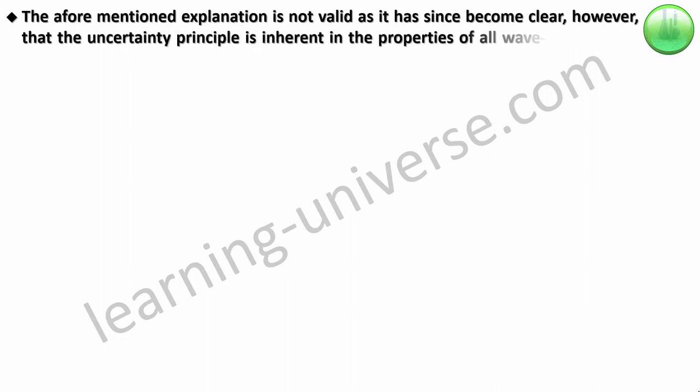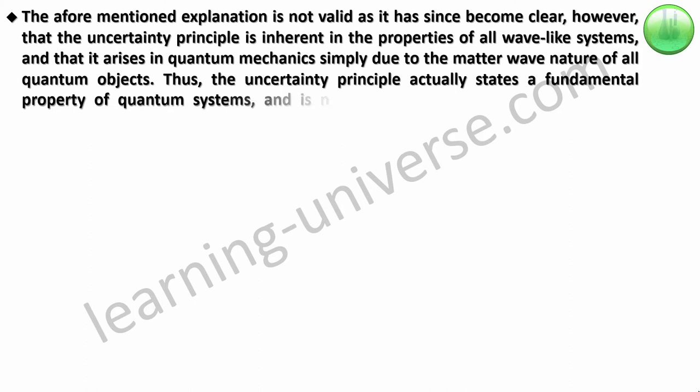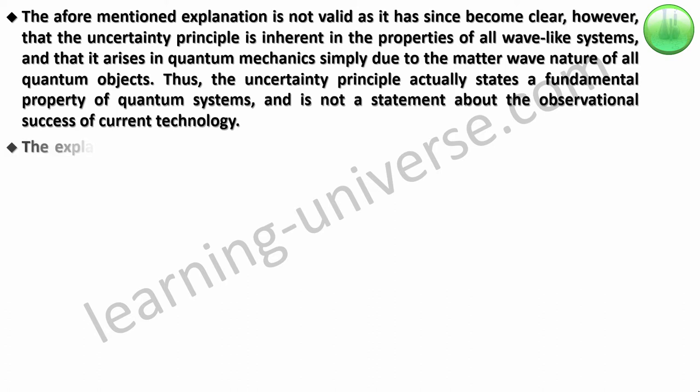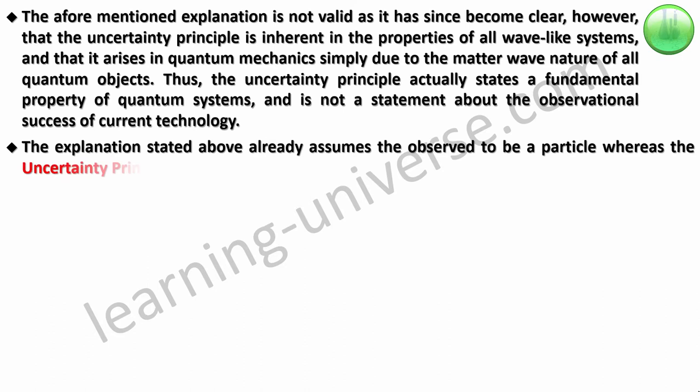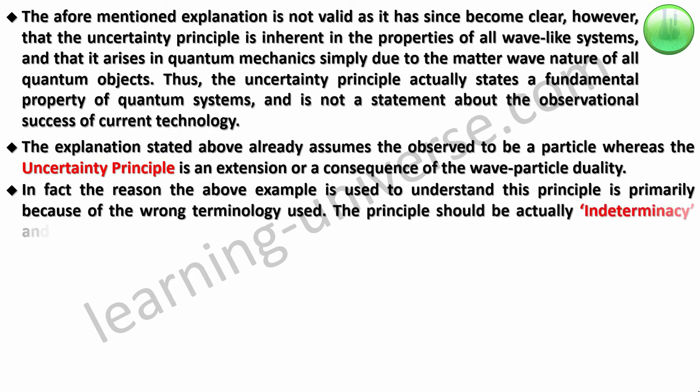Now that we have seen it, the aforementioned explanation is not valid. As it has since become clear, however, that the uncertainty principle is inherent in the properties of all wave-like systems. And that it arises in quantum mechanics simply due to the wave nature of all quantum objects. Thus, the uncertainty principle actually states a fundamental property of quantum systems and is not a statement about the observational success of current technology. The explanation stated above already assumes the observed thing to be a particle, whereas the uncertainty principle is an extension or consequence of wave-particle duality.